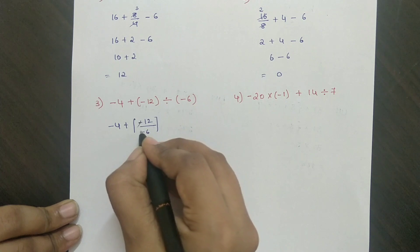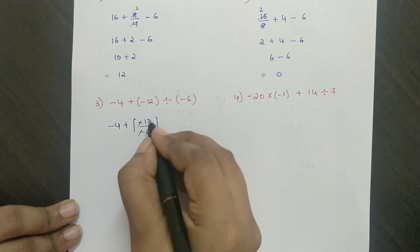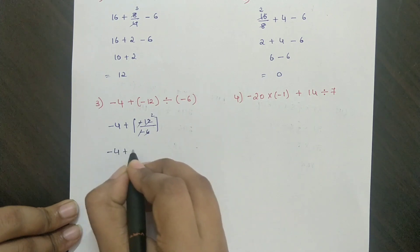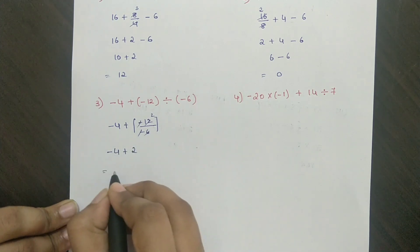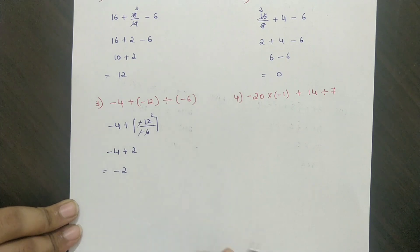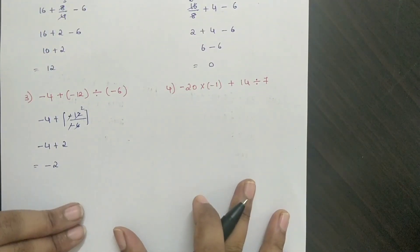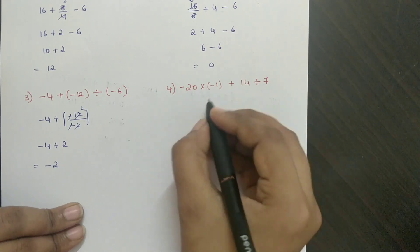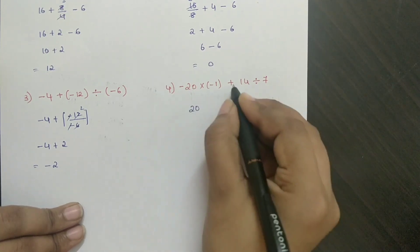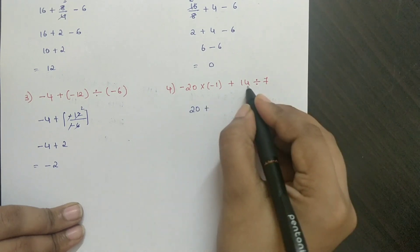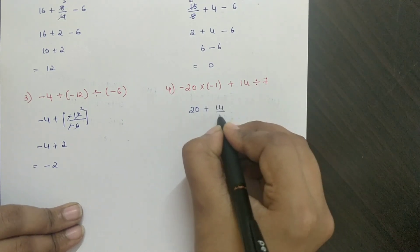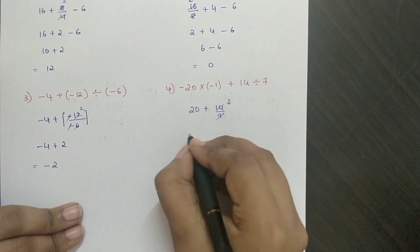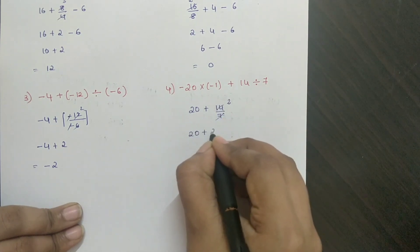Third problem: minus 4 plus minus 12 divided by minus 6. Minus minus cancel: 6 twos are 12, therefore minus 4 plus 2 equals minus 2. Fourth problem: minus into minus plus 20 into 120, plus minus 14 divided by 7. 7 twos are 14, so 20 plus 2 equals 22.